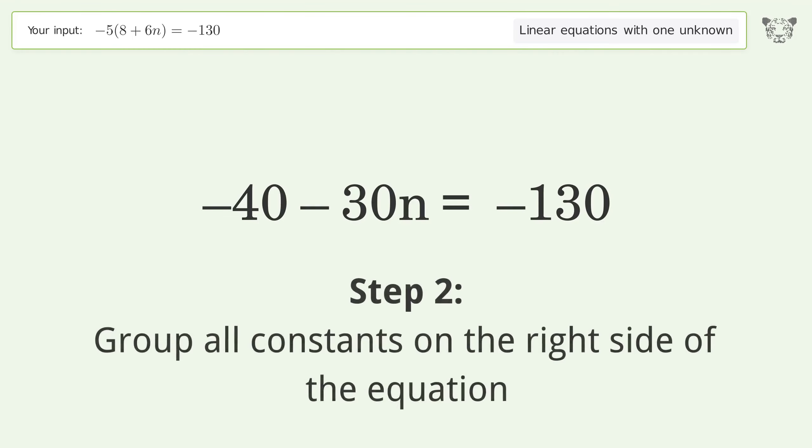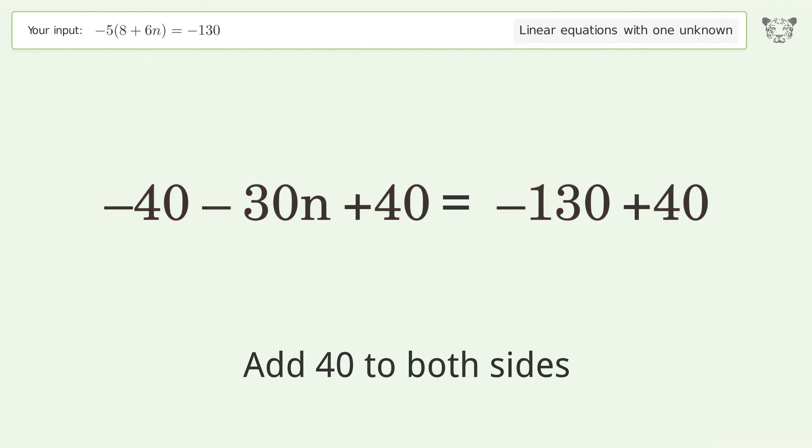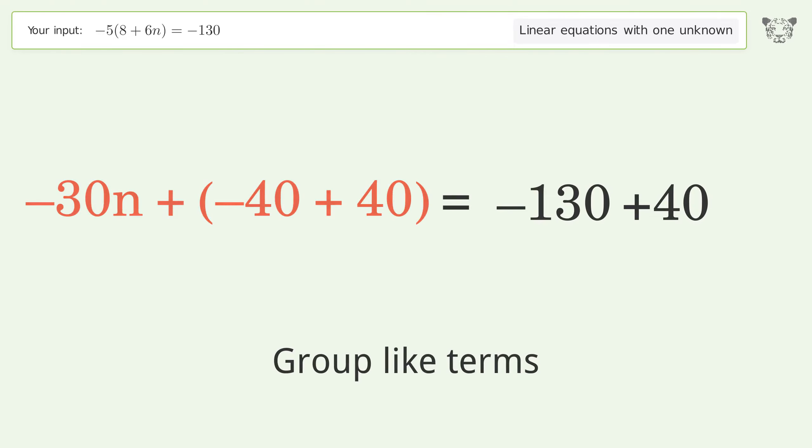Group all constants on the right side of the equation. Add 40 to both sides. Group like terms. Simplify the arithmetic.